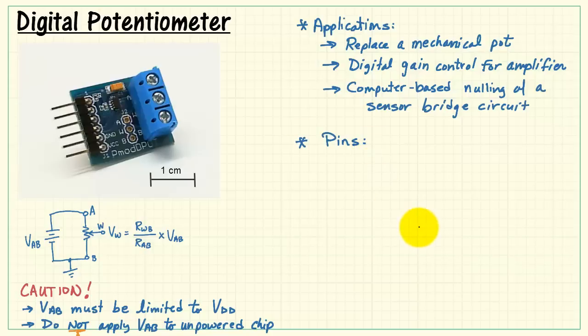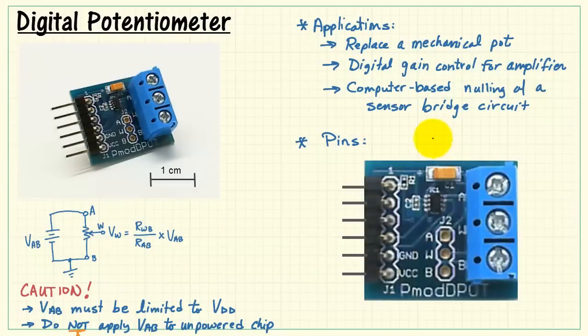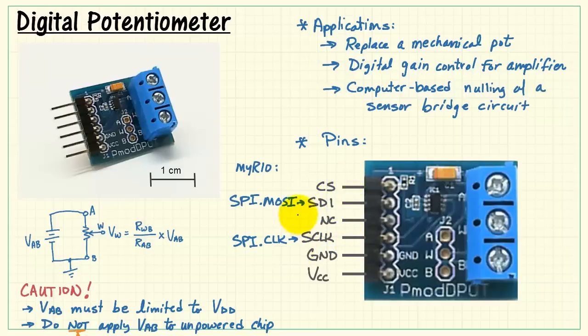Now let's review the pinout for this device. The analog devices chip is located here. Power and ground are located on pins 5 and 6 of the J1 connector. These pins are associated with our SPI connections, serial clock and serial data in. This is a no-connect, and pin number 1 is the chip select for the board. The SPI can be controlled from the MOSI and clock pins from myRIO, and you can use a digital output to control the chip select.